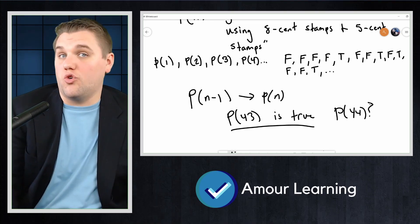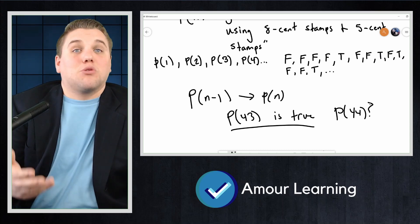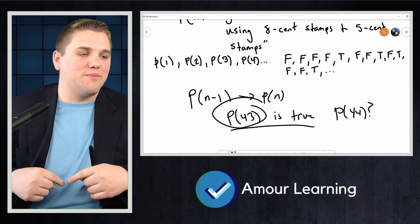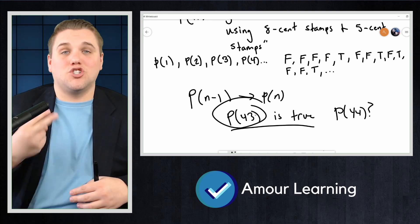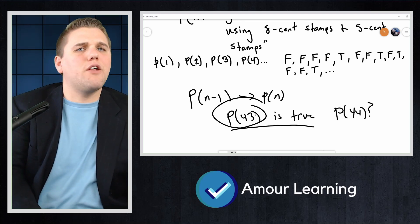so we have a way to make 44 cents, so P(44) is true. Of course, we assumed that we had at least three 5-cent stamps to make P(43) here, so that we can convert those three 5-cent stamps into two 8-cent stamps to make P(44), but what if we didn't?